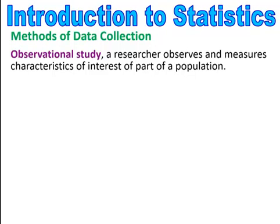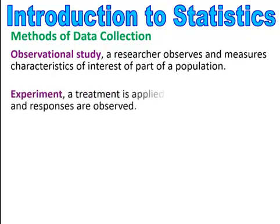Methods of data collection. The first method is an observational study — that's where researchers observe and measure characteristics of interest of part of a population. An experiment is when a treatment is applied to part of the population and the responses are observed.